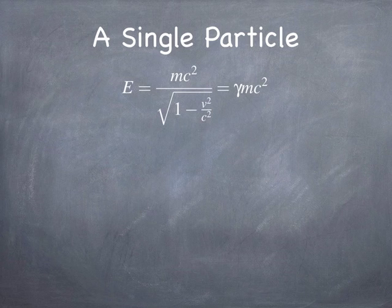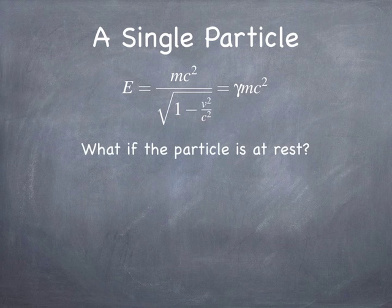The simplest case is if you have a single particle. If you have a single particle and that's all there is in the system — everything else is in the surroundings — then the energy is easy to compute. It's just gamma mc squared. You can see if the particle is at rest, gamma is equal to 1, and you get the rest energy, mc squared.